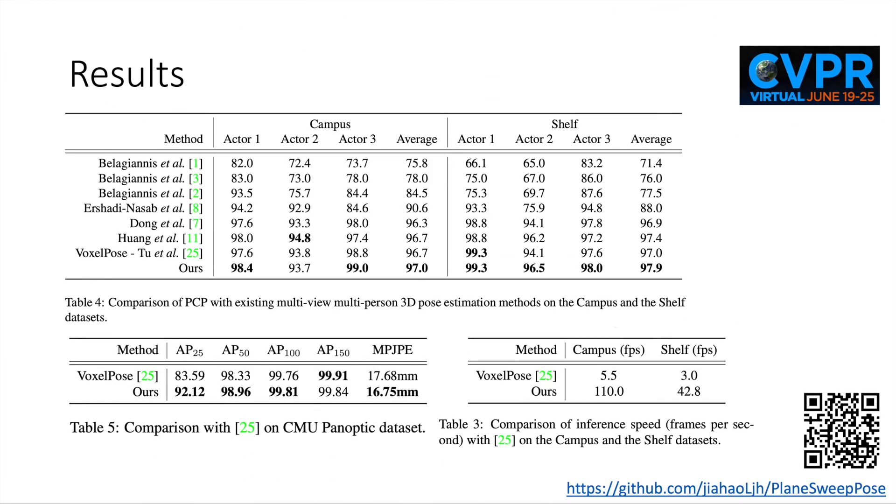We conduct experiments on benchmark datasets, including the Campus and the Shelf datasets, as well as the CMU Panoptic dataset. Our method achieves state-of-the-art performance and is remarkably faster compared to the voxel-based method. Our source code is publicly available. Please check out our webpage for more details. Thank you.